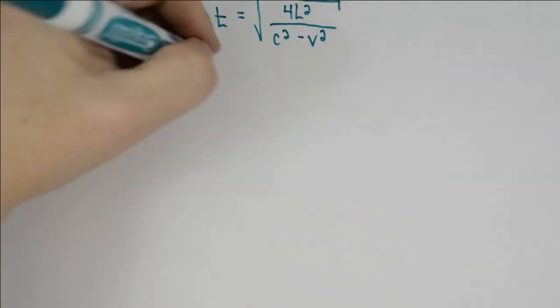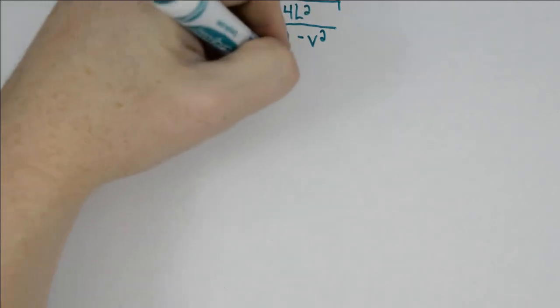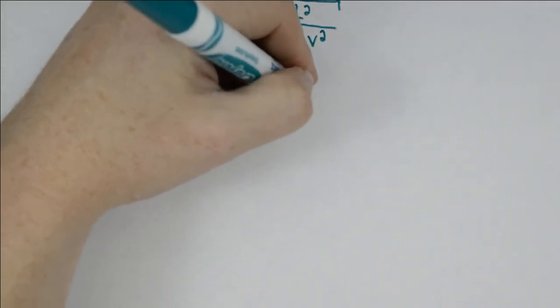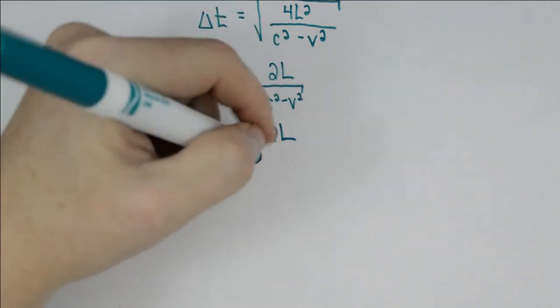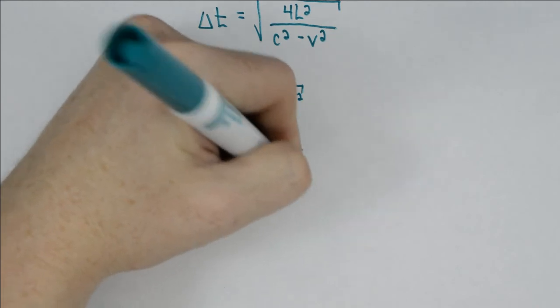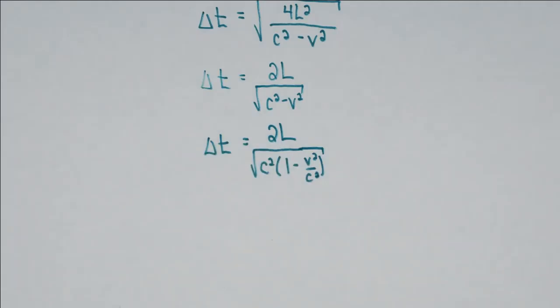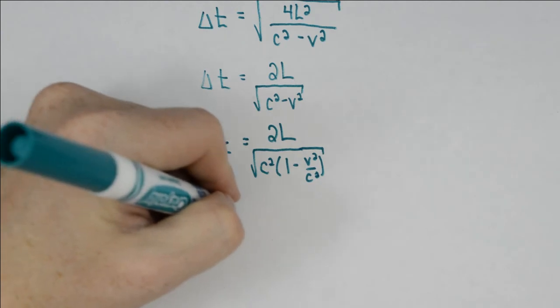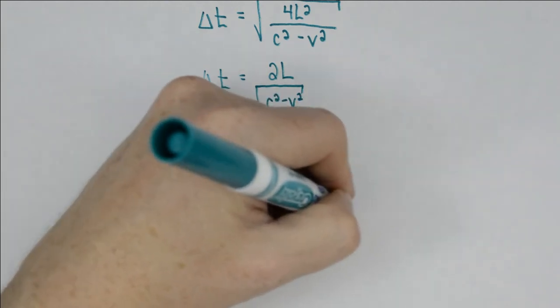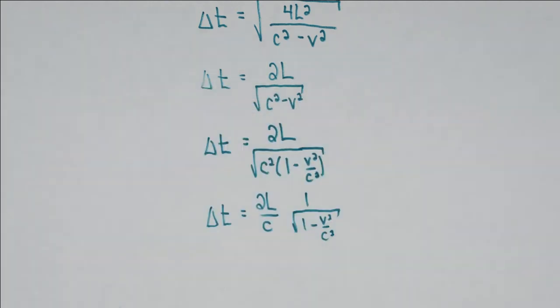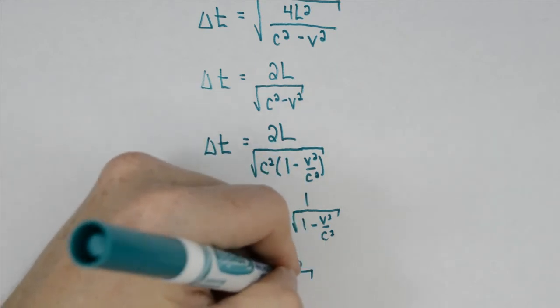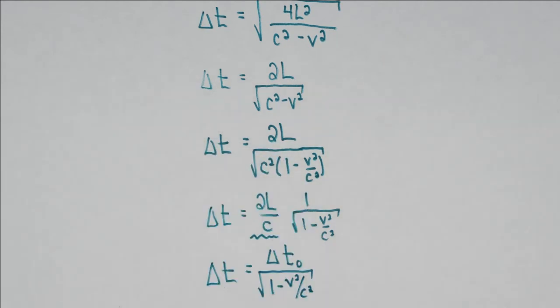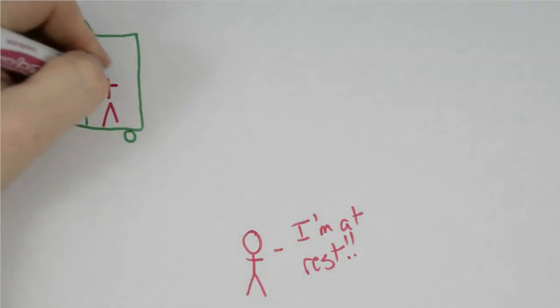We can now take the square root of 4L squared over C squared minus V squared, which is going to give us 2L over the square root of C squared minus V squared. The next step cleans things up: we have 2L over the square root of C squared multiplied by 1 minus V squared over C squared. We can take the square root of C squared, so we're left with 2L over C multiplied by 1 over the square root of 1 minus V squared over C squared. But we've previously seen that 2L over C is delta T naught. So we're left with our final expression delta T is equal to delta T naught divided by the square root of 1 minus V squared over C squared.